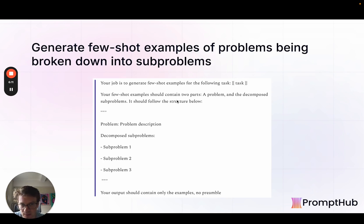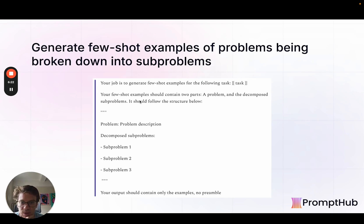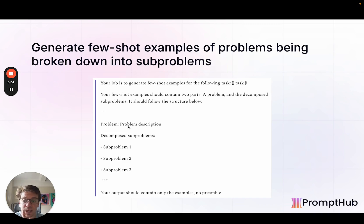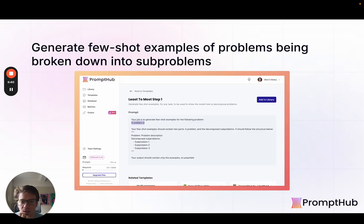To generate few-shot examples of problems being broken down into subproblems, the prompt looks something like this: generate few-shot problems for the following task — the examples should have a problem and decomposed subproblems, and should follow the given structure. So whatever the task is — say, answering customer support tickets — we'll get a few examples of related customer support tickets with decomposed subproblems. Then we'll have a few examples to send along. We have a template for this, which we'll look at in a second.